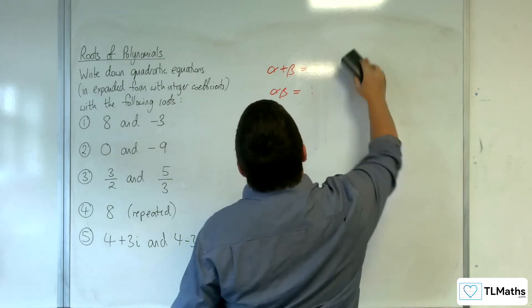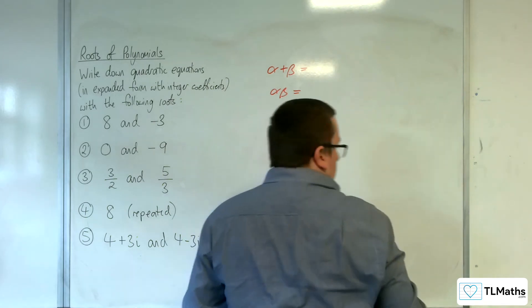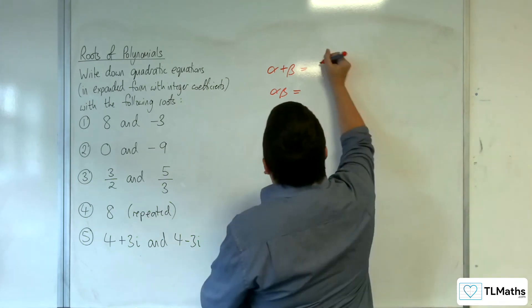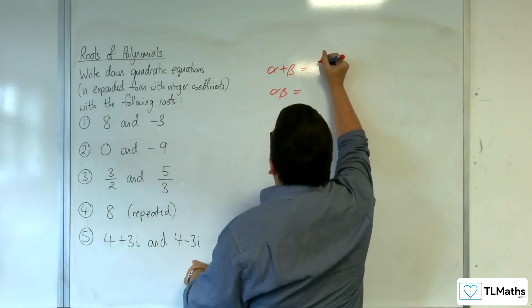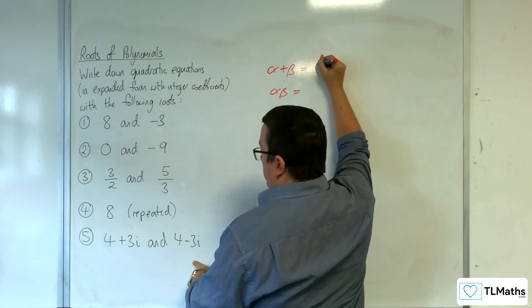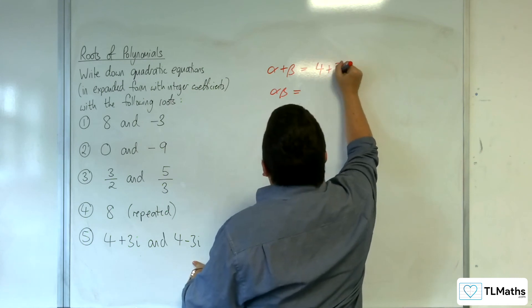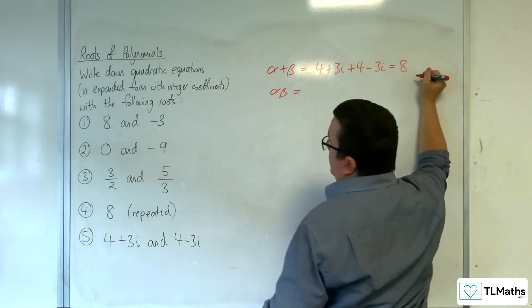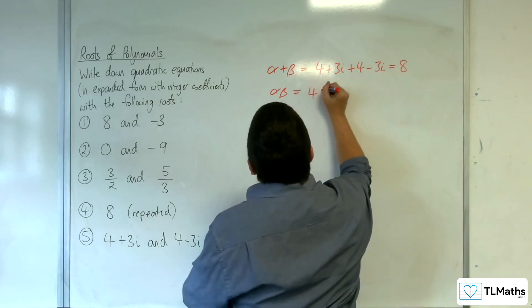Now this method becomes particularly useful when the roots are complex. So we've got 4 plus 3i and 4 minus 3i. So we need to add them together. So 4 plus 3i plus 4 minus 3i, which of course is just 8. And then the product,